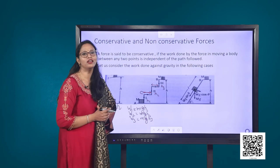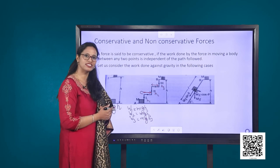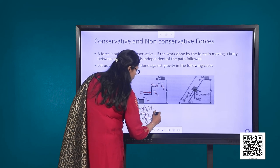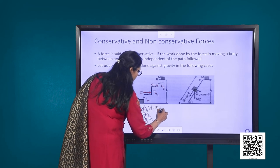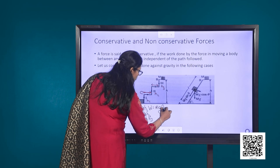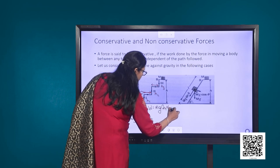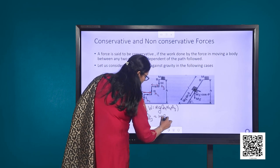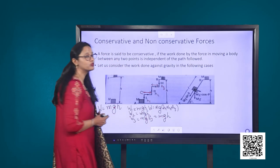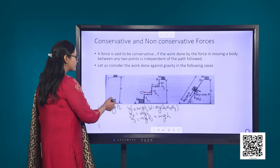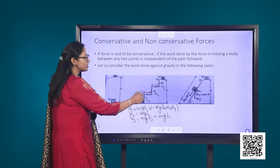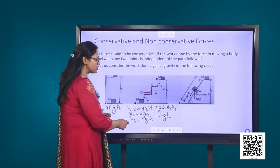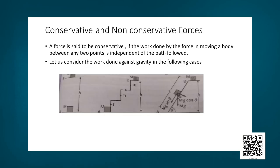The total work done is the sum of all three: W equals mg into h1 plus h2 plus h3, which is nothing but mg h. So whether we take the object straight up or through a series of steps, the work done against the force of gravity remains the same.